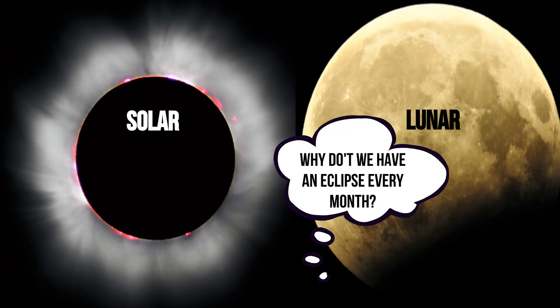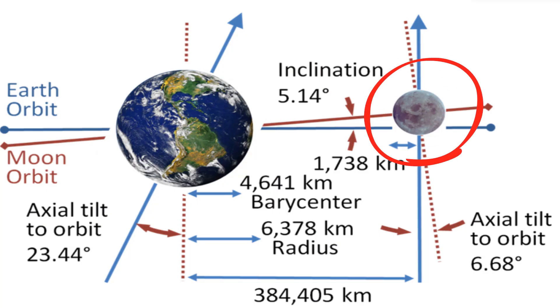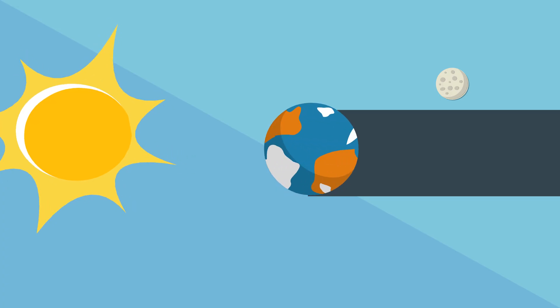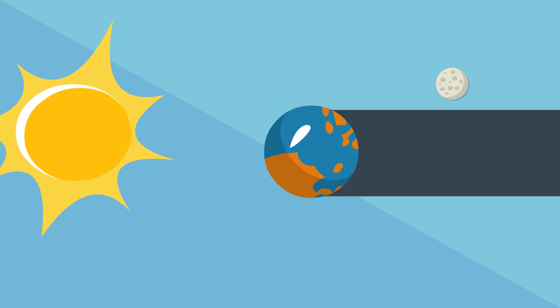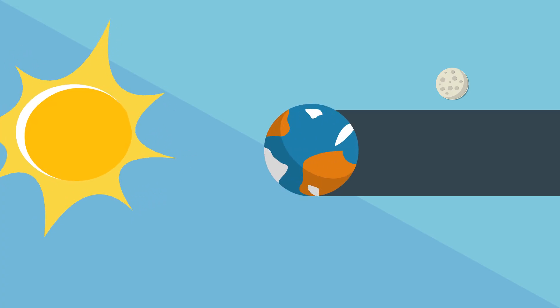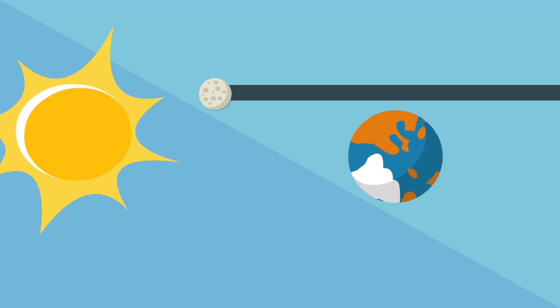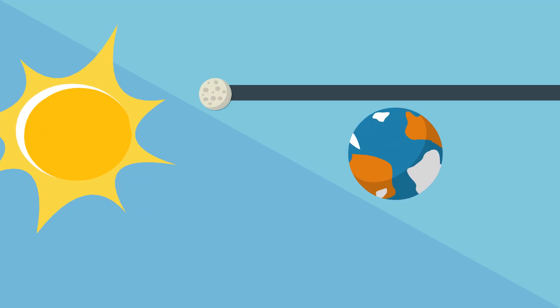You may be wondering why don't we see a solar and lunar eclipse every month. The reason is the moon's orbit around the earth is tilted about 5 degrees relative to the orbit of the earth around the sun. This tilt is just enough to place the moon out of the earth's shadow for most full moons, and the earth out of the moon's shadow for most new moons.